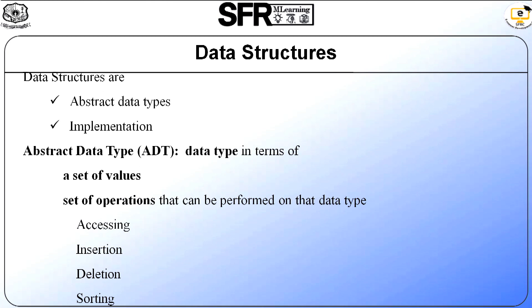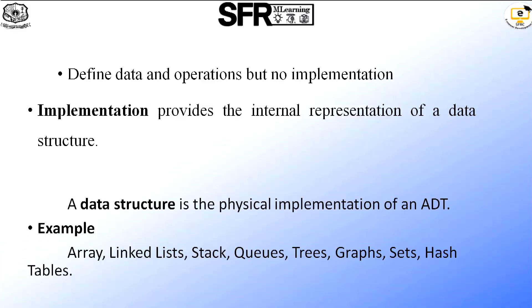Therefore, data structures can be defined as an abstract data type and its implementation. Abstract data type (ADT) is a data type defined in terms of a set of values and a set of operations that can be performed on it. The operations may include accessing an element, inserting a new element, deleting an element, and sorting elements. In ADT, we define the data and operations but provide no implementation. Implementation means providing the internal representation of the data structure — how a particular data structure is implemented.